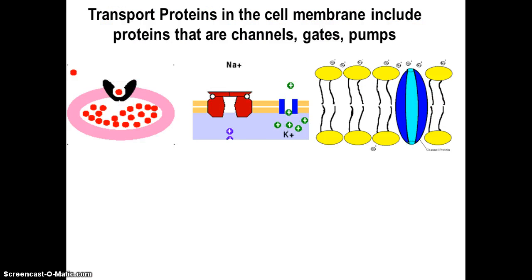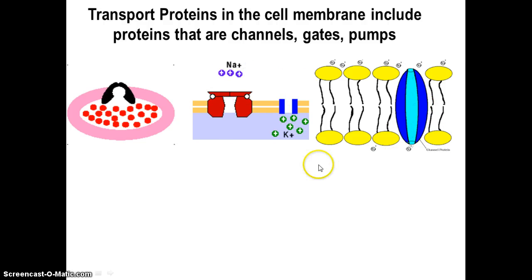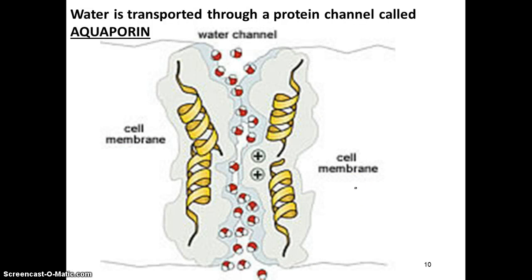You also have other proteins in the cell membrane that act like channels, allowing large and charged particles to pass through. Some act like gates, like a revolving door, or even a pump. A very important protein channel is an aquaporin — a protein channel that allows water through via a charged channel that attracts water to pass through one molecule at a time.